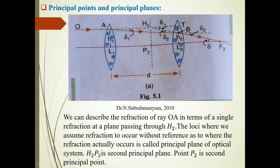It seems that the ray is refracted only once from this H2 point. The plane passing through this H2 point perpendicular to the principal axis is the H2P2 plane. This is the second principal plane. The point where this H2P2 plane intersects the principal axis is P2, the second principal point.